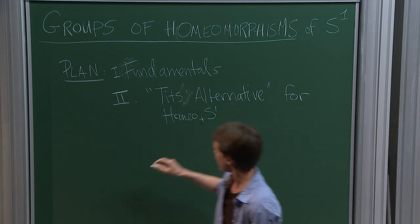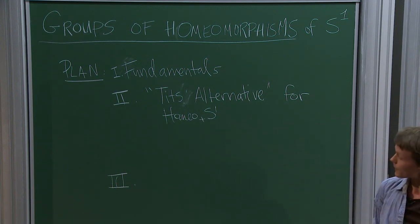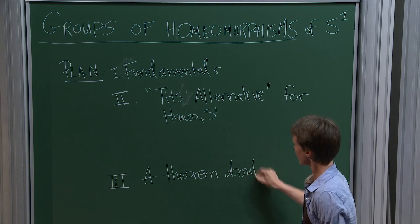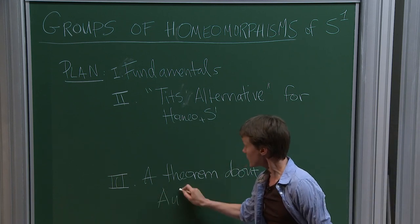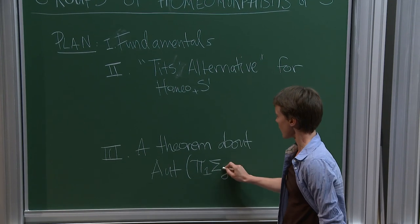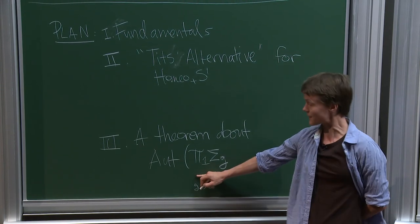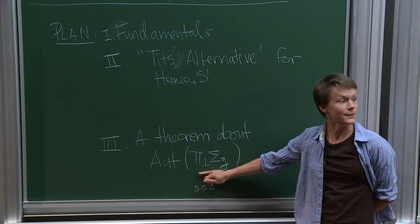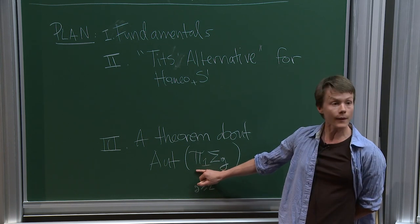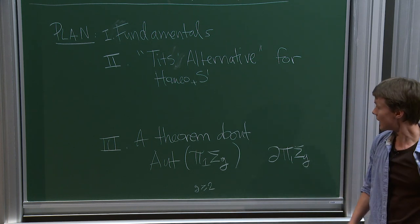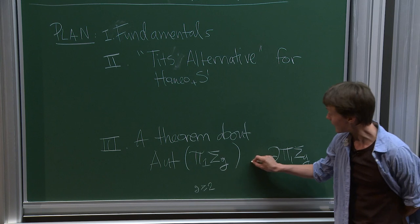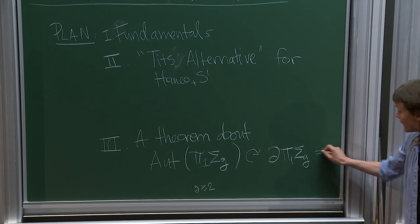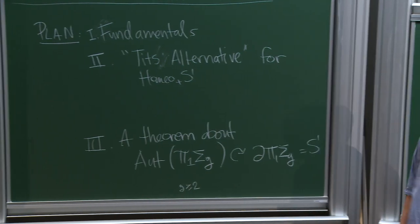In the next hour, I'm going to prove a theorem about a particular action of a particular group — the group of automorphisms of the fundamental group of a surface, π₁(Σ_g) with g at least two, so a hyperbolic surface. This group, being hyperbolic, has a boundary, and the group of automorphisms acts on this boundary. And what is this boundary? It's a circle.